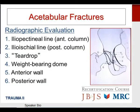Acetabular fractures are characteristically evaluated radiographically with AP, iliac oblique, and obturator oblique images, and there are several different radiographic landmarks critical for classifying and characterizing these fractures. The first is the iliopectineal line, which is the radiographic landmark for the anterior column of the acetabulum. Next is the ilioischial line, the radiographic landmark for the posterior column. The teardrop is not an actual anatomical structure but a radiographic density, useful for evaluating the possibility of protrusion of the femoral head medially.